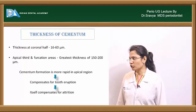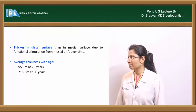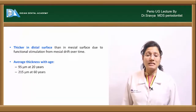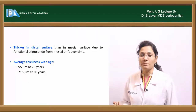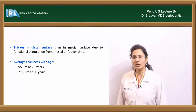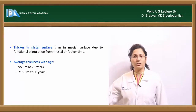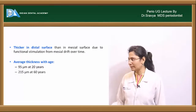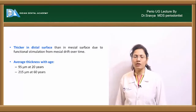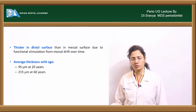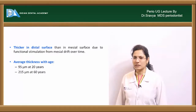Apical cementum deposition compensates for loss of tooth structure due to attrition. Cementum is also thicker on the distal surfaces than the mesial surfaces due to functional stimulation from the mesial drift. Average thickness also increases with age: about 90 micrometers in younger individuals, and about 215 micrometers in older individuals around age 60.